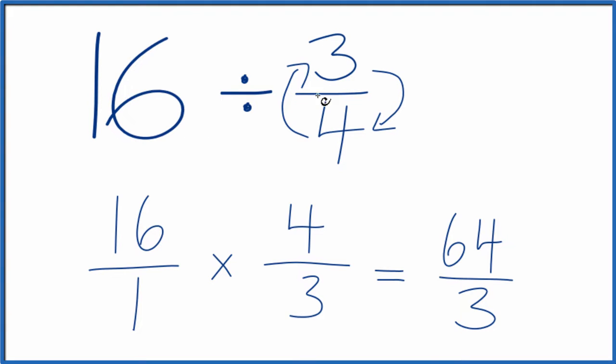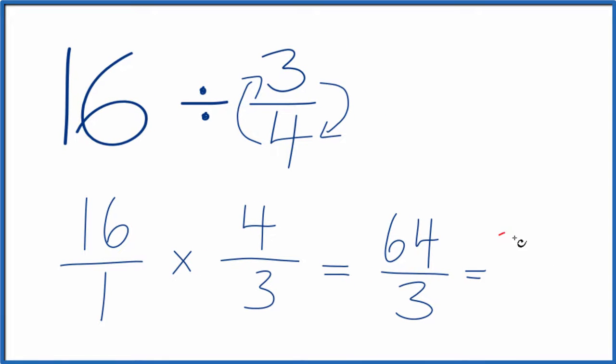16 divided by 3 fourths is 64 over 3. This is an improper fraction. We could change this to a mixed number. 3 times 21, that's 63. So we could say 21 and that one left over, 1 third. So 64 over 3 is equal to the mixed number 21 and 1 third.